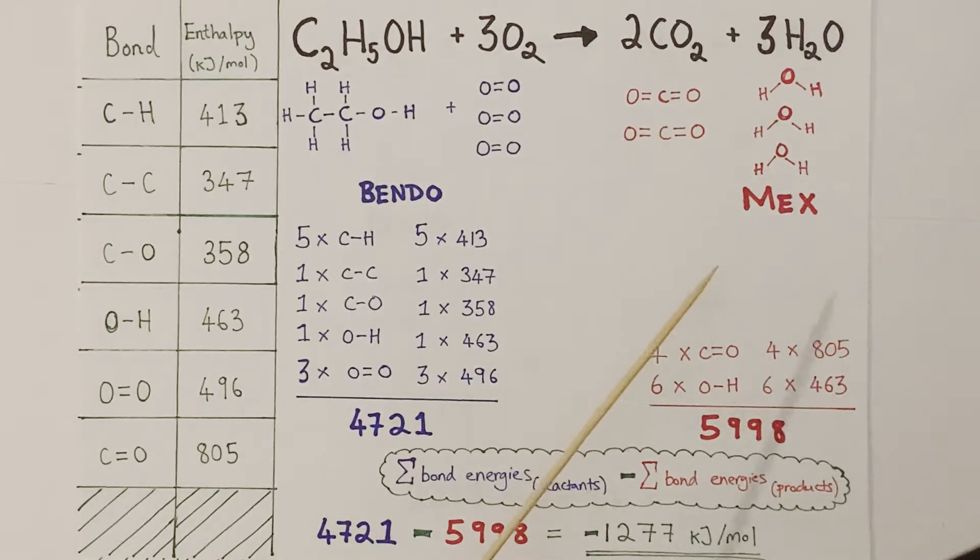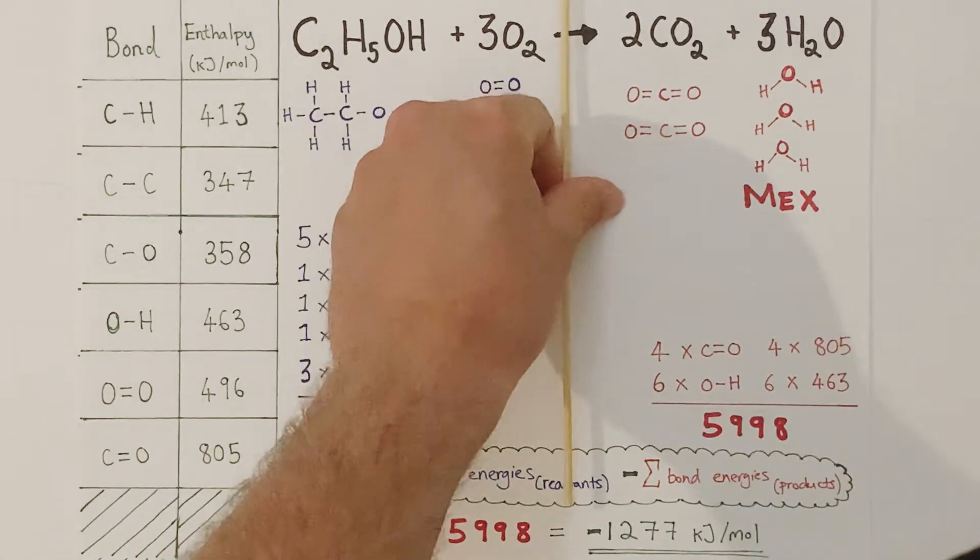Now, why do I deal with the products separately to the reactants? Because, if I bring in my knowledge of energetics, I'm talking about this in terms of BENDO and MEX. Breaking bonds within the reactants is an endothermic process, whereas making bonds within the products is an exothermic process. So I deal with the products as a separate process.